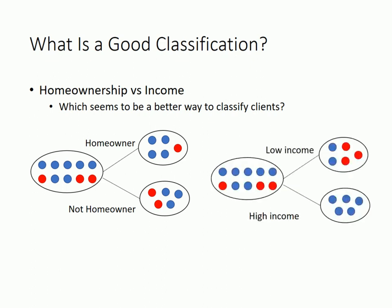Now let's classify the data by income. There are also two splits: low-income and high-income. There are again five low-income clients and five high-income clients. Three of the low-income clients default, while none of the high-income clients default.